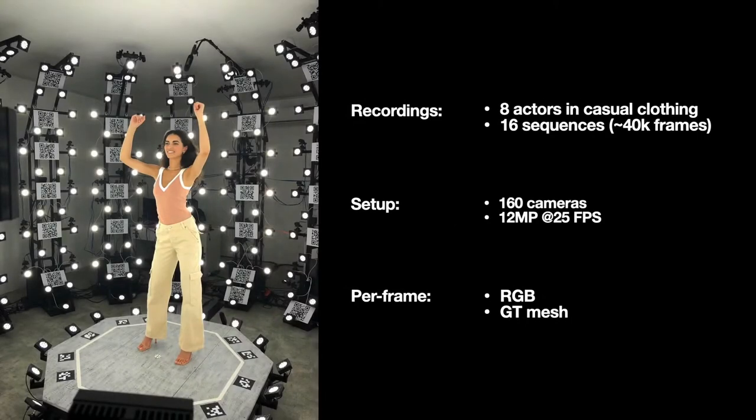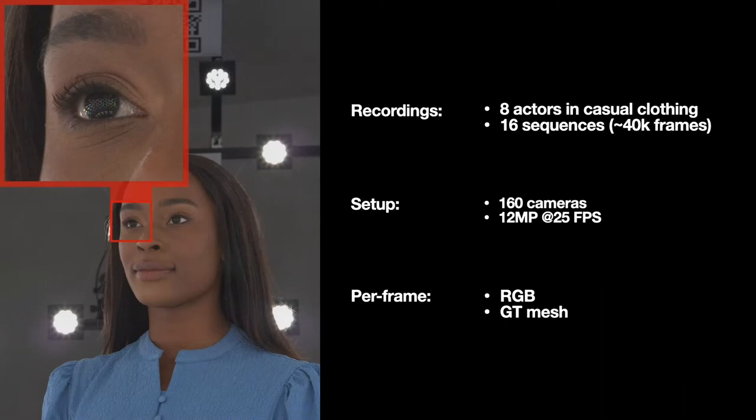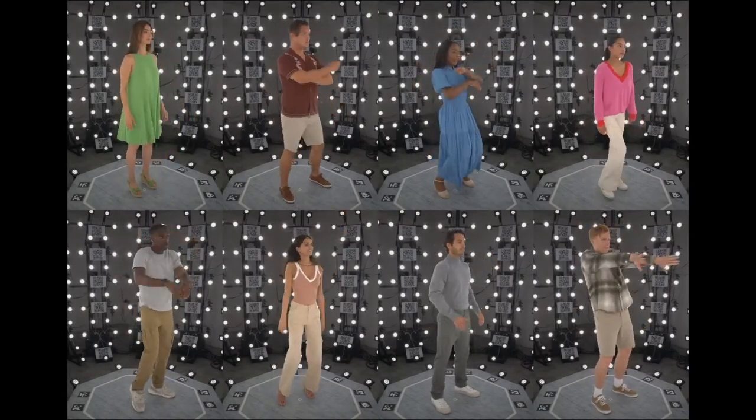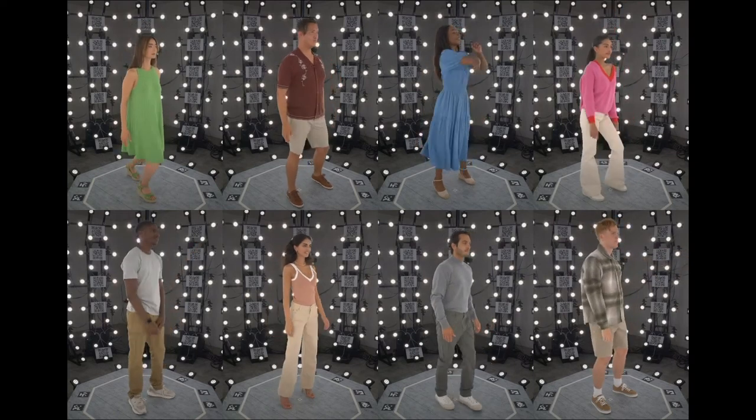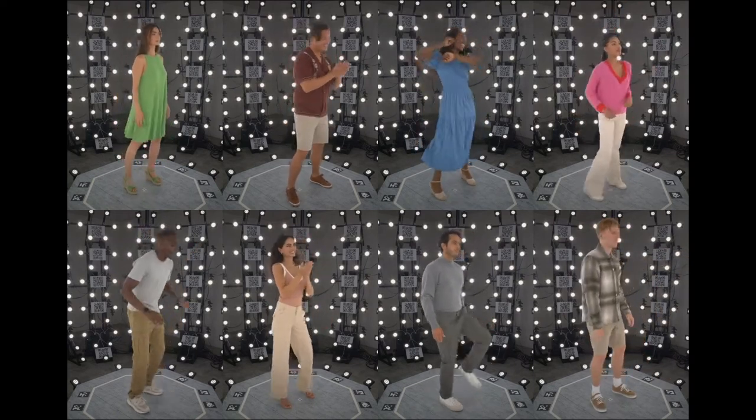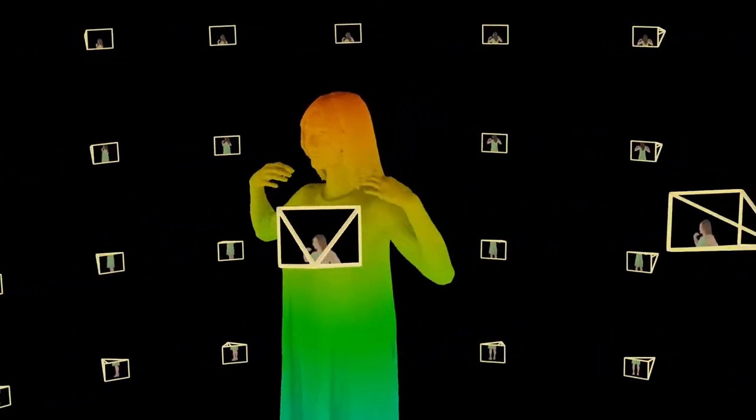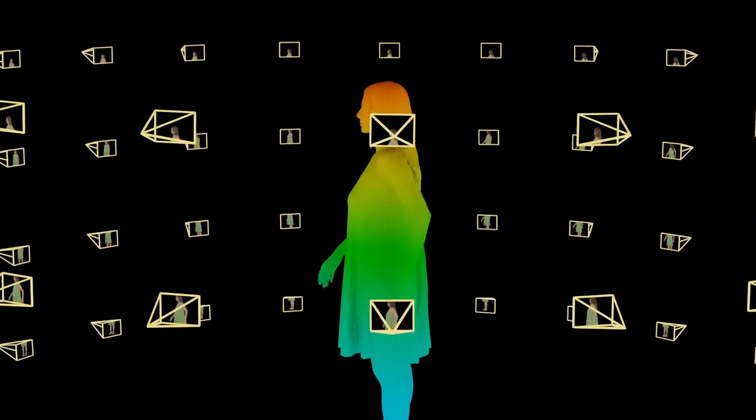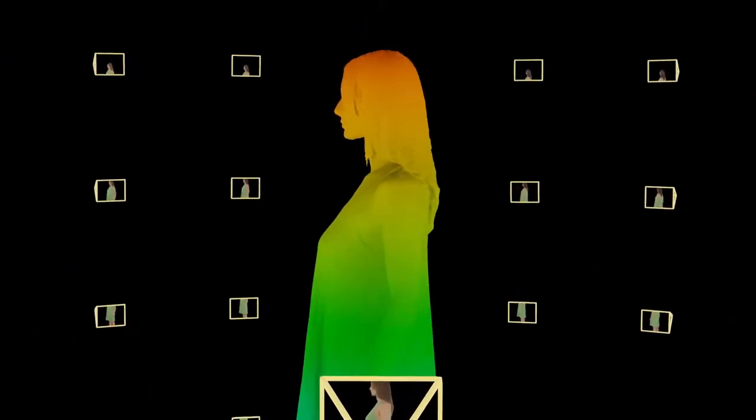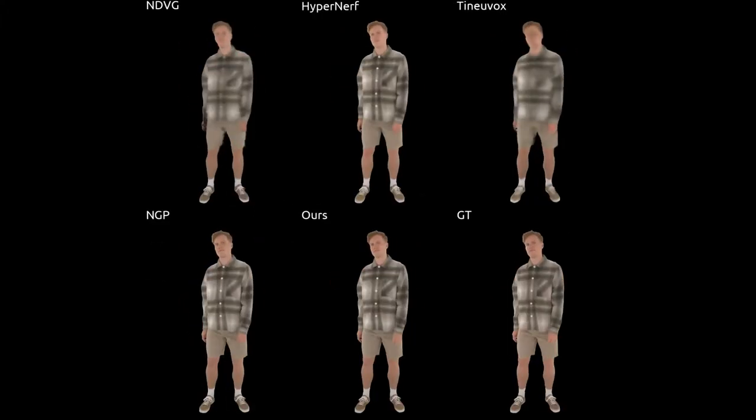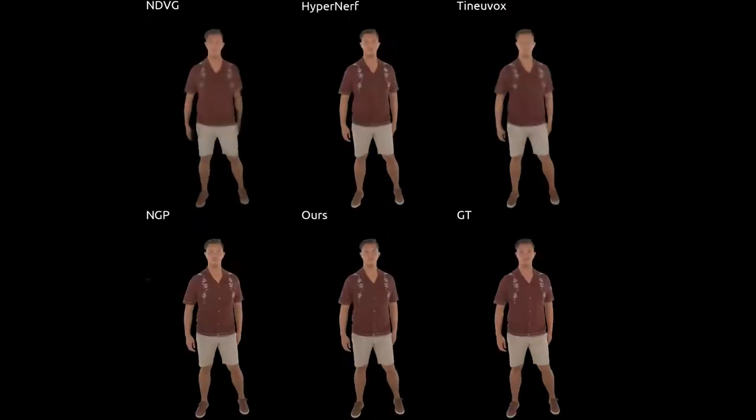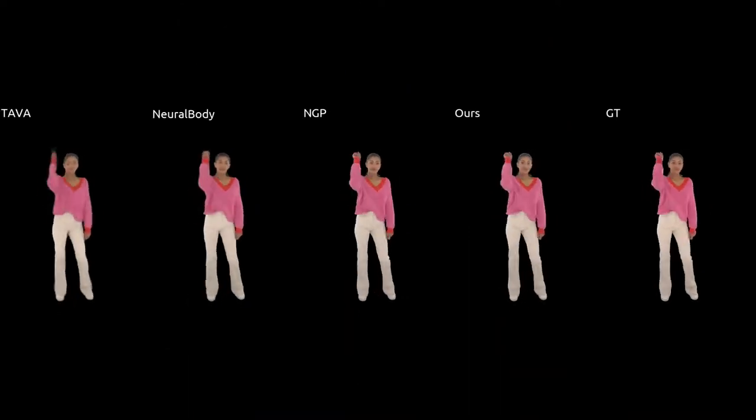To achieve high fidelity, we captured a new dataset called ActorsHQ, which has 8 times the resolution of other publicly available datasets. It contains over 40,000 frames for 8 actors and for each actor we provide sequences with different levels of challenging motion. The multi-view setup uses 160 calibrated 12 megapixel cameras and a ground truth mesh reconstruction is available per frame. We compare HumanRF with various baselines using per frame metrics like LPIPS as well as the video consistency score VMAF.